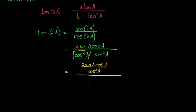The denominator has 2 terms, so both terms have to be divided. So cos squared A is divided by cos squared A minus sine squared A is divided by cos squared A.